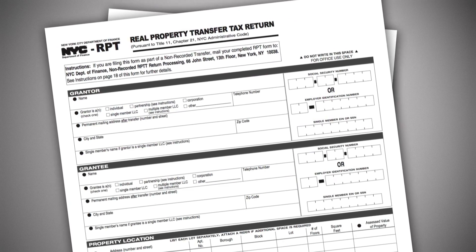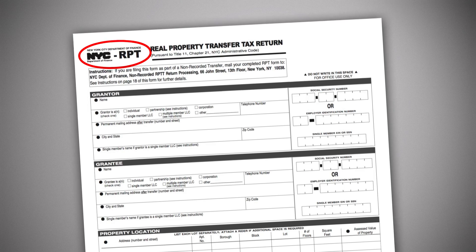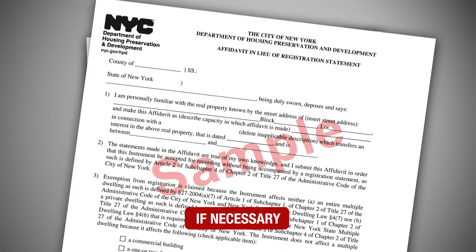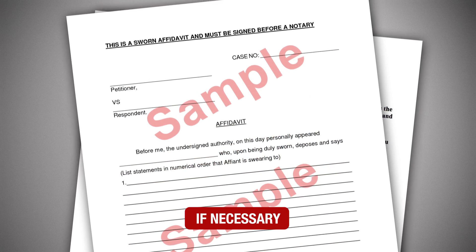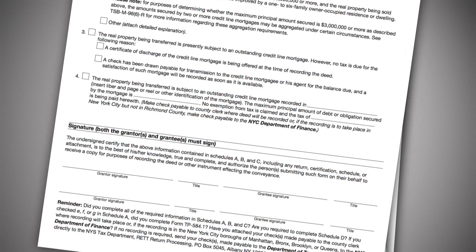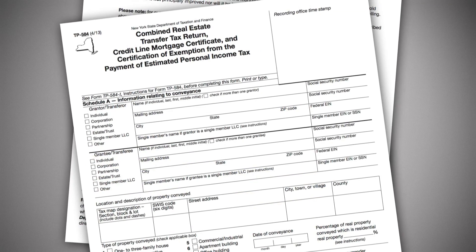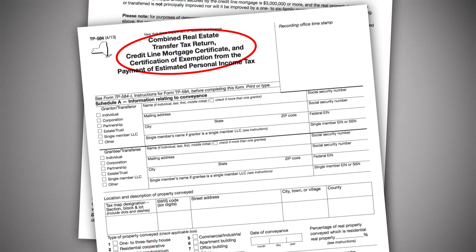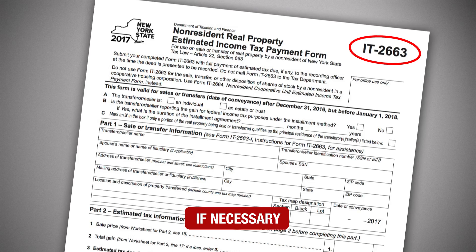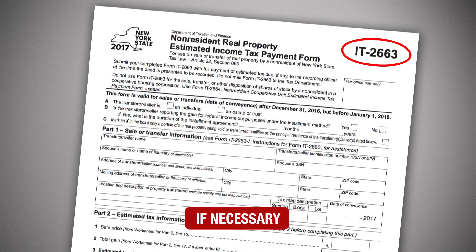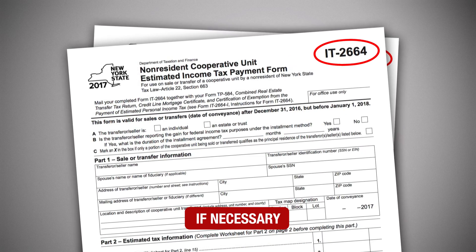Three: the signed and notarized signature pages for the NYC Real Property Transfer Tax Form, along with supporting documents associated with this form, such as an HPD Affidavit, Contract of Sale, Power of Attorney, and/or Affidavit of Missing Social Security Number, if necessary. Four: the signed signature pages of your NYSRETT — the New York State Transfer Tax Form TP-584 — along with any supporting documents associated with it, such as your IT-2663 Non-Resident Real Property Estimated Income Tax Payment Form, or IT-2664 Non-Resident Cooperative Unit Estimated Income Tax Payment Form, if necessary.